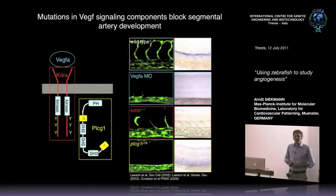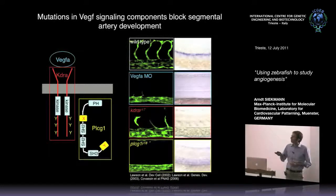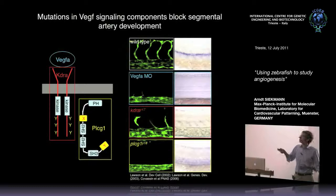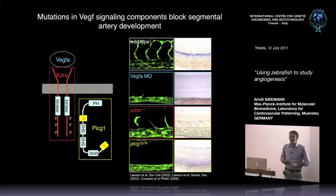In mutants for VEGF signaling components, when you compare intersomitic vessels of wild type with mutants, you see variable effects but always a defect in the proper formation of these angiogenic sprouts. Additionally, you have loss of arterial marker gene expression - EphB2, which is exclusively expressed in the artery from which these sprouts form - and you lose this expression in VEGF mutants. So VEGF is a key component controlling both morphogenesis and gene expression patterns in endothelial cells.